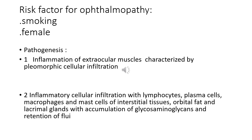The pathogenesis of thyroid eye disease: (1) Inflammation of extraocular muscles characterized by lymphocytic cellular infiltration with increased secretion of glycosaminoglycans and osmotic retention of water. Muscle size increases to nearly eight times normal, leading to restriction of movement and later fibrosis causing restrictive myopathy and diplopia. (2) Inflammatory cellular infiltration of interstitial tissue, orbital fat, and lacrimal gland with accumulation of glycosaminoglycans and water retention, increasing the volume of orbital contents and elevating intra-orbital pressure.